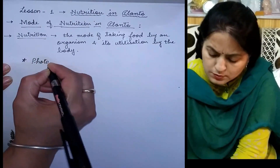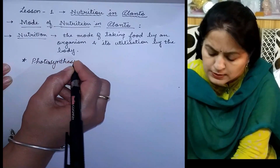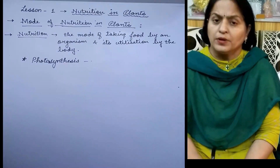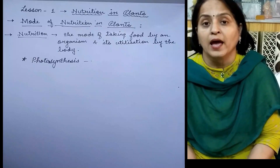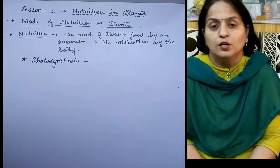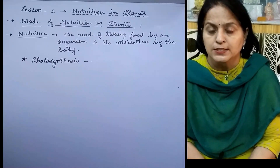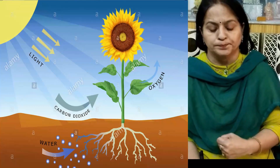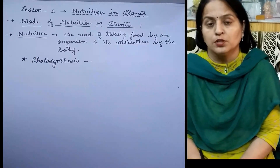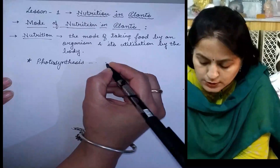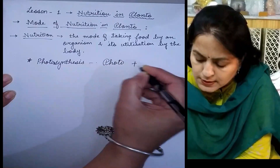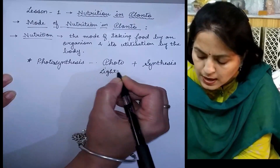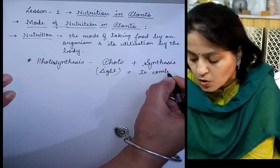The next subheading is photosynthesis. Only green plants can make their own food with the help of sunlight because they have chlorophyll in them. Chlorophyll is a green colored pigment present in the leaves which traps sunlight to make food in the presence of carbon dioxide and water. If you break the word 'photosynthesis' you get two words: photo, meaning light, and synthesis, meaning to combine or to prepare.